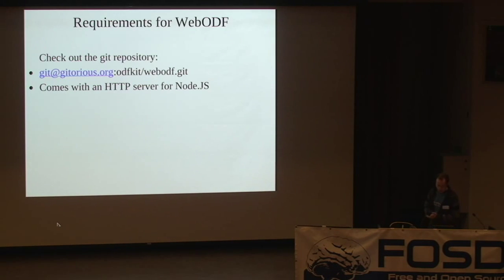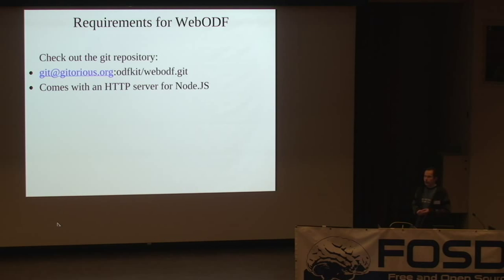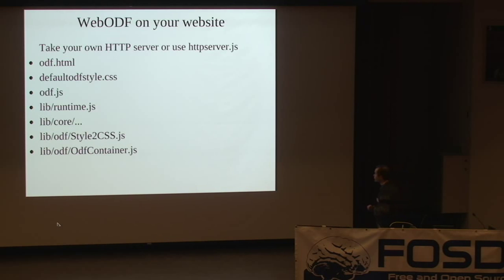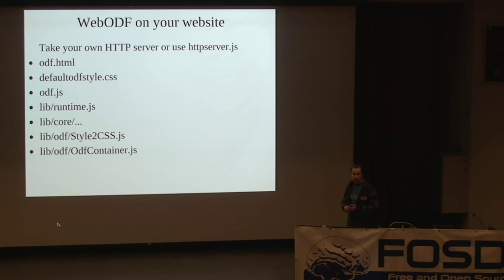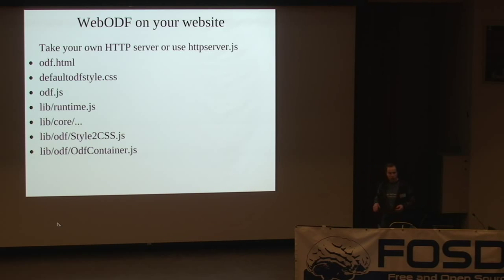How to use WebODF — what do you need? You don't really need a lot. You just check out the Git repository; it's quite small. And you need a web server — that's all you need. There's a small script inside of WebODF called HTTPServer.js, which you can use with Node.js to start a small web server. But you can just as easily use Apache or any other web server. You take the web server and copy these files: one ODF HTML — that's basically the application — a CSS file with the default styling, the basic startup ODF.js, and the rest of the functionality in separate JavaScript files.